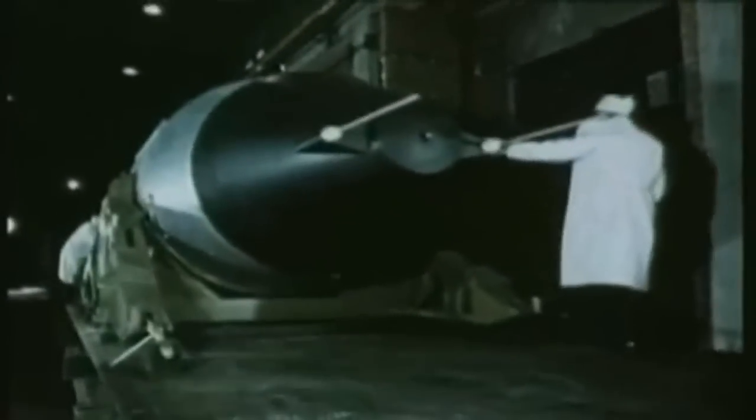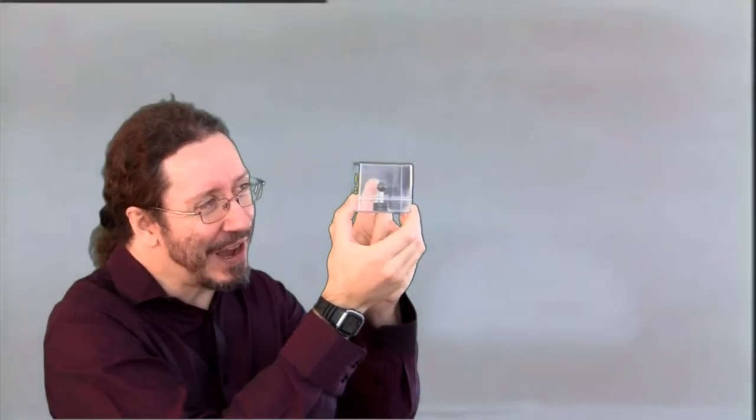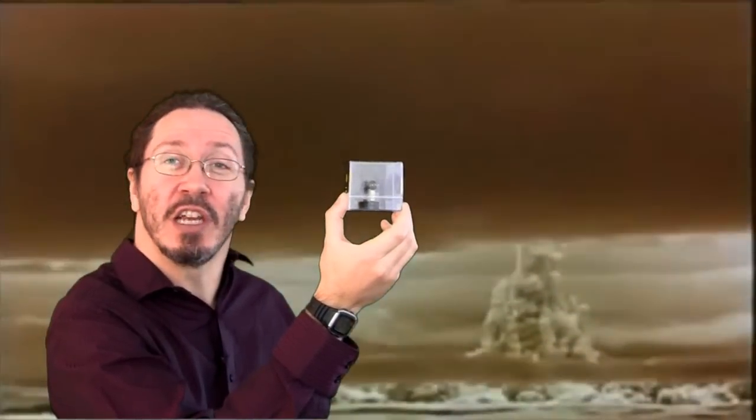The Tsar bomb, which exploded with the equivalent of 58 million tons of TNT, or all the explosives used in World War II multiplied by 10. Well, if the stasis field would fail on this guy, it would release the equivalent energy of 15 million Tsar bombs in the very first second.